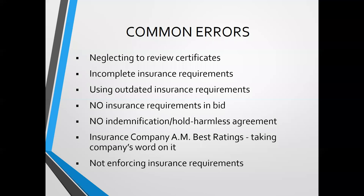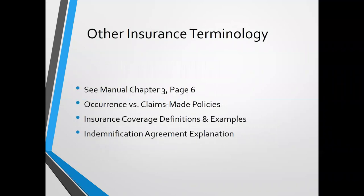Common errors we see: not reviewing certificates, having incomplete insurance requirements where we simply don't use everything, and not including insurance requirements for a bid or indemnification language at all. Under the leases system, the risk of accidentally utilizing older or outdated language should be eliminated. In many cases, insurance company AM Best ratings are not verifiable or insurance requirements are simply not being enforced. Within our manual, there are explanations of the things we discussed today — definitions of occurrence versus claims-made policies, coverage definitions and examples, and indemnification agreement explanations.